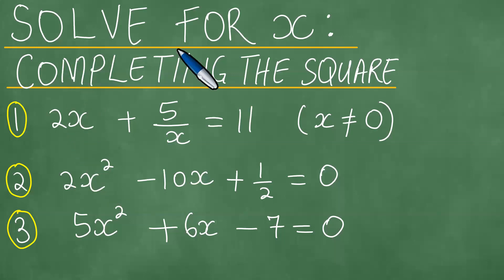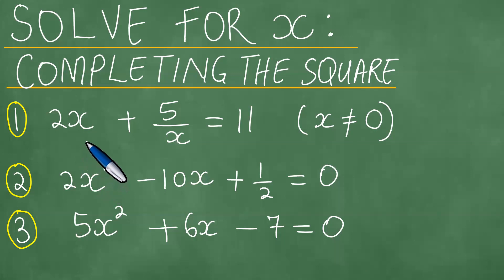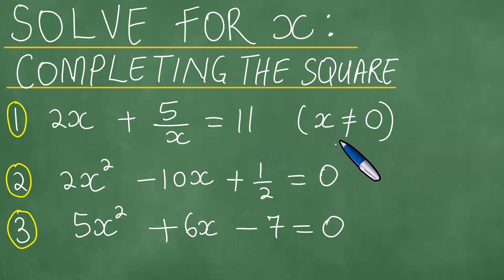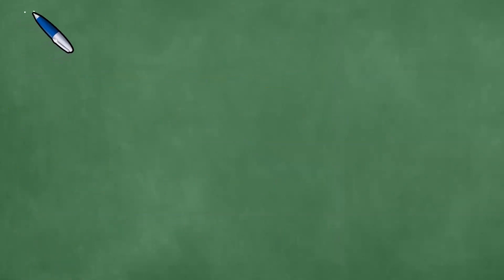We need to solve for x by using the method of completing the square. The first question is 2x plus 5 over x equals 11. The restriction is that x must not be equal to zero. Let's look at the solution to this, number one.